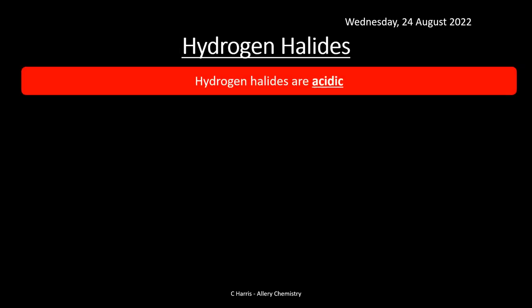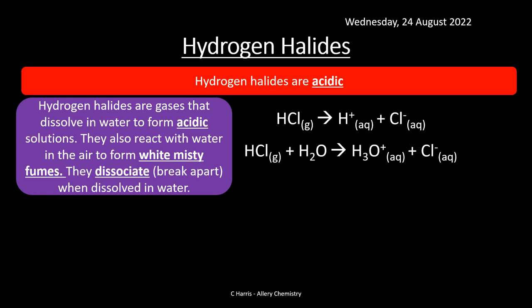Hydrogen halides are acidic. They're basically gases and they can dissolve in water to form acidic solutions — remember, acids are aqueous. They react with water in the air and can form white misty fumes. They can dissociate — that is, break apart — when dissolved in water.